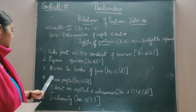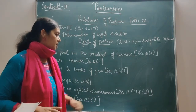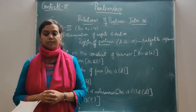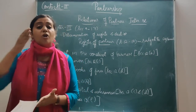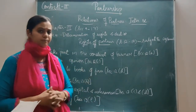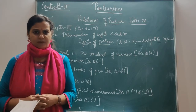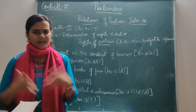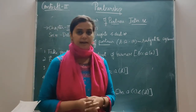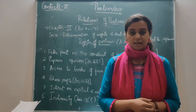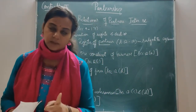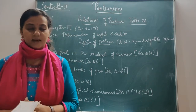The third right is the right to access the books of the firm, given under Section 12d. Every partner has a right to access the accounts book — they can inspect it and also have a copy of any book of the firm, not only accounts books. Whatever transactions have been made — accounts books, auditing books, anything — the partners have a right to access them. In case a partner is not able to collect it personally, the partner can appoint an agent and authorize him to collect it from the firm.